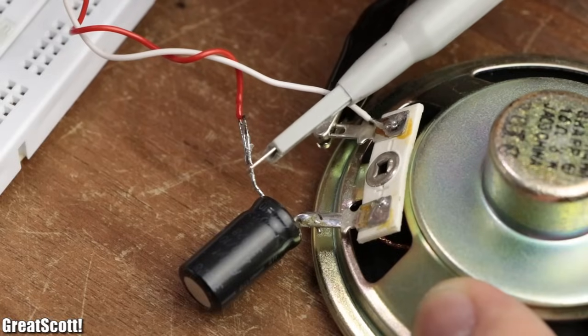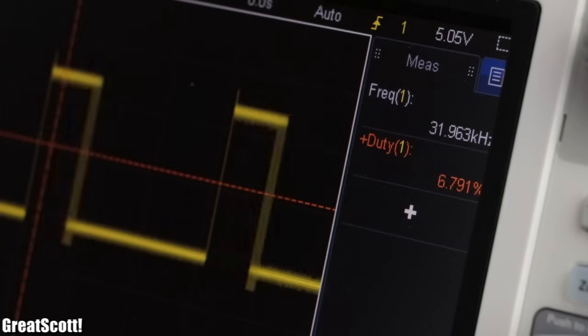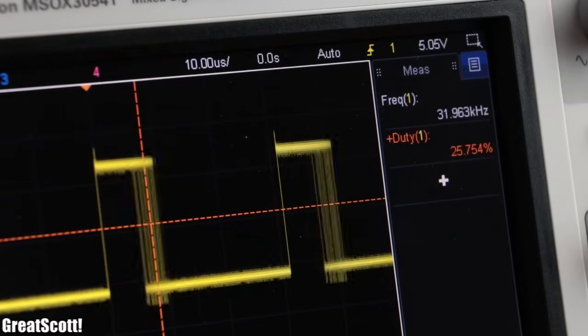And if we take a look at the audio waveform on the oscilloscope, we can see that it is a PWM signal with a frequency of 32 kilohertz and a modulated duty cycle, which should be suitable for the Tesla coil circuits.